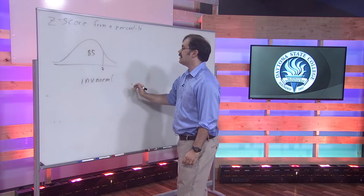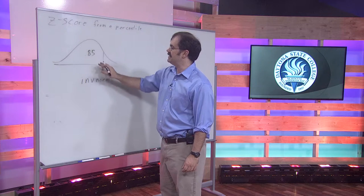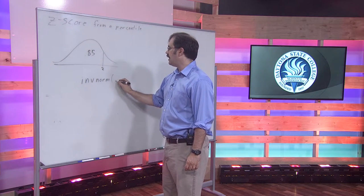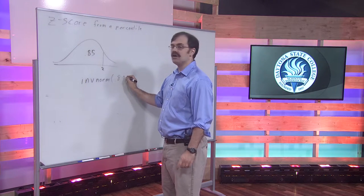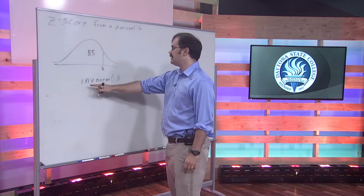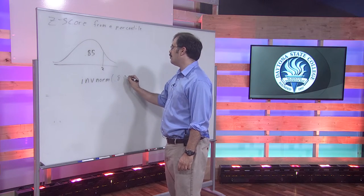So here's our 85%. If we wanted a z-score that has 85% to the left of it, INVNORM assumes you're talking about the area to the left of the z-value. So all you have to do is type in INVNORM 0.85.